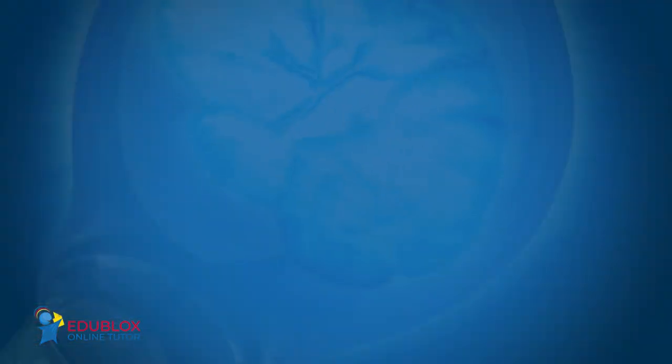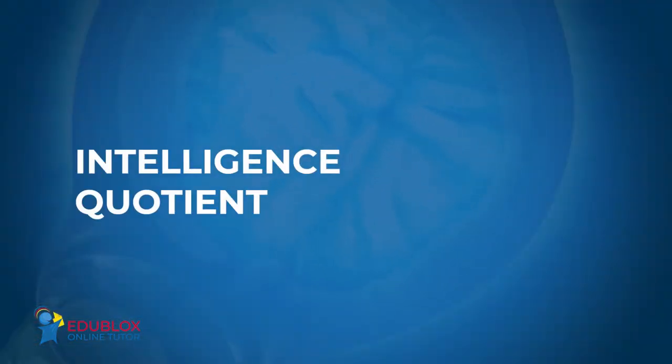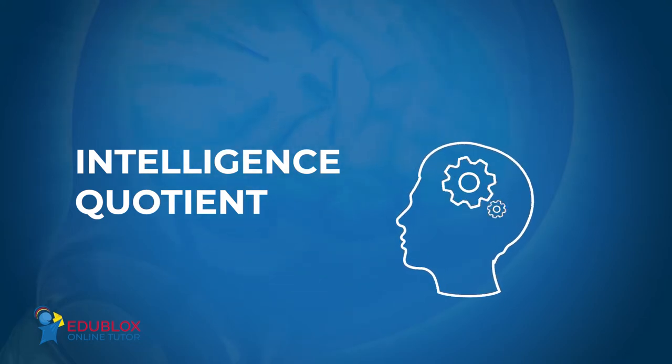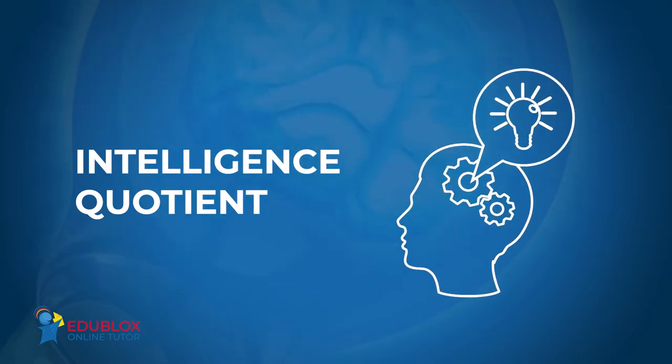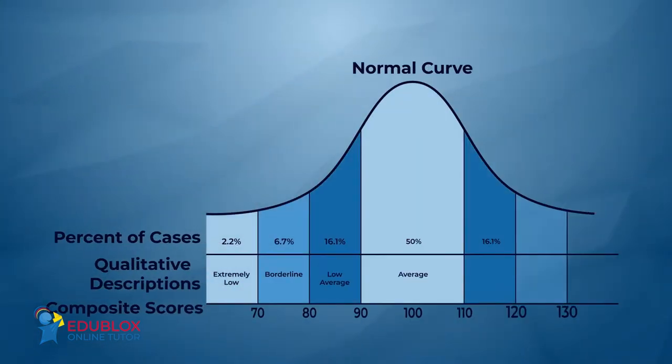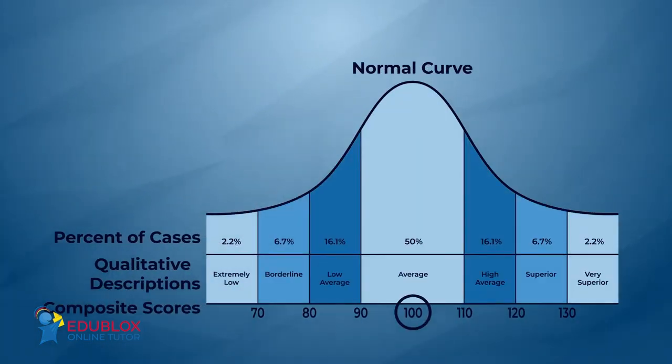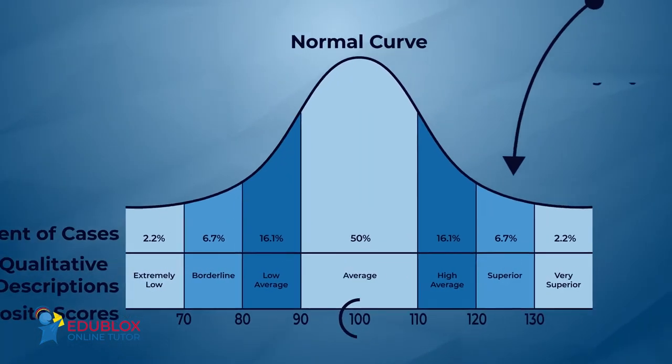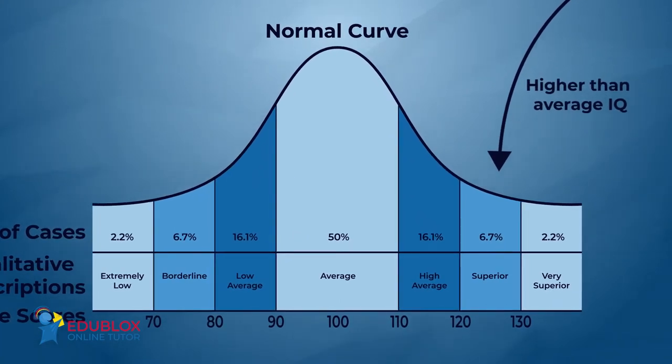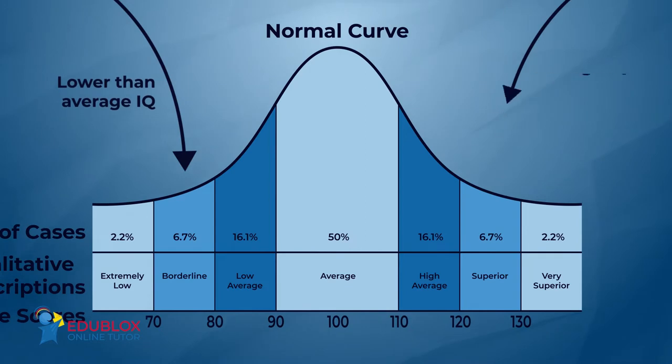IQ stands for intelligence quotient. Supposedly, it's a score that tells one how bright a person is compared to other people. The average IQ is by definition 100. Scores above 100 indicate a higher than average IQ and scores below 100 indicate a lower than average IQ.